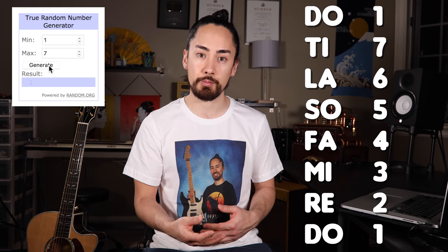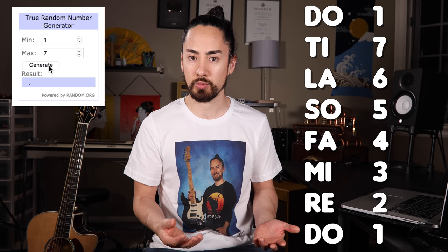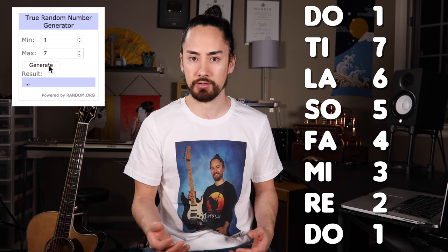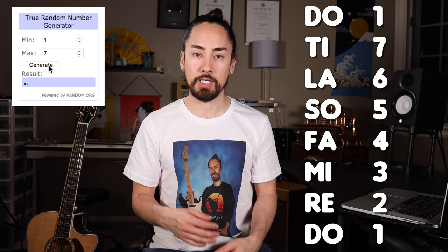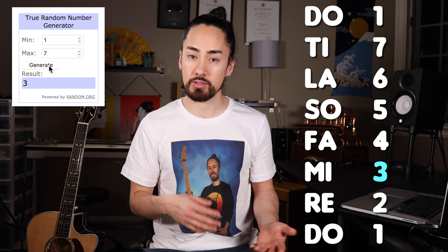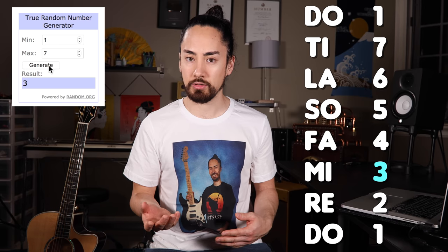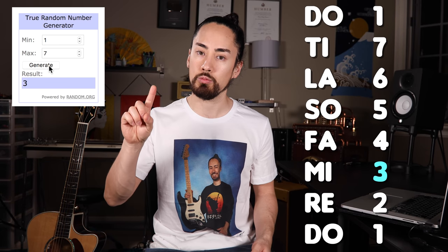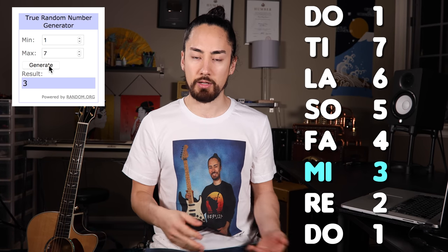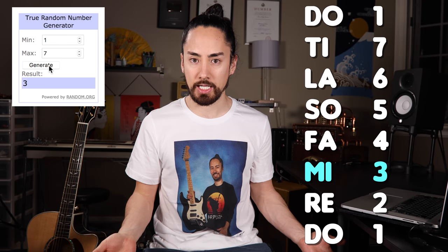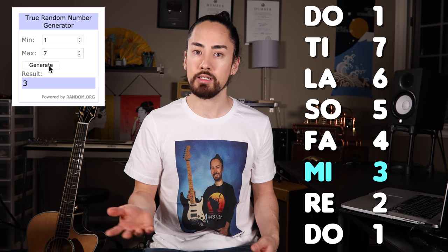Each one of these numbers will correspond with one of the different scale degrees. If it picks, say, three, I'll use the third scale degree — Do, Re, Mi. I'll do this 19 times, giving me 19 notes. From there I'll add some rhythm to the notes, match them up with some chords, and see if I can build a track.